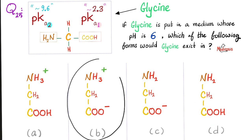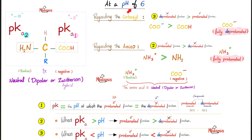The answer is B — a positive end and a negative end, a hybrid. And what's the name of a hybrid ion in German? Zwitterion. Zwitter means hybrid — positive and negative — making the entire structure overall neutral. Why is this true? Because at pH 6, PKA1 is lower than the pH of the medium, whereas PKA2 is greater than the pH of the medium. Remember: when the PKa equals the pH, the protonated form will equal the deprotonated fraction.